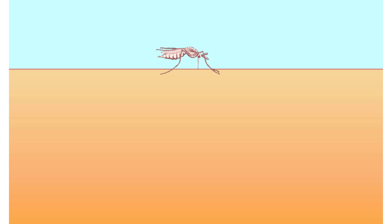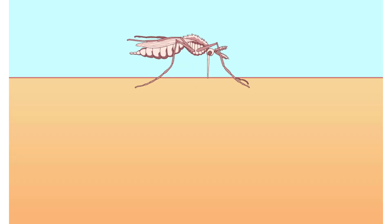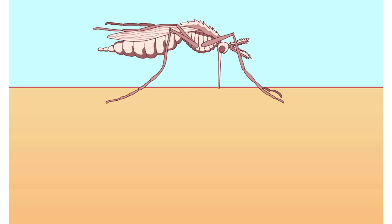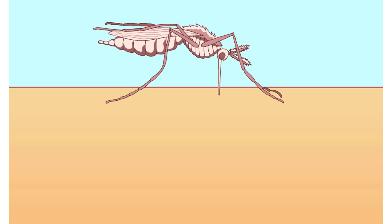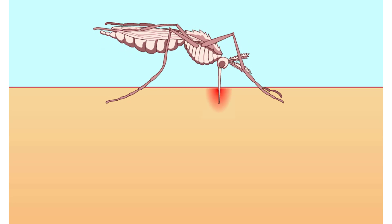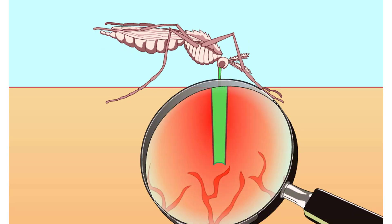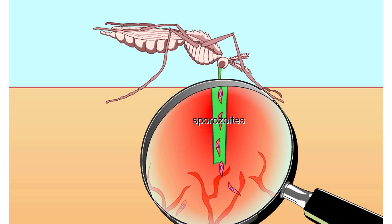Malaria is caused by the sporozoan plasmodium. It is transferred to humans by mosquitoes. When an infected mosquito feeds, infected sporozoites move from her salivary glands into the human body.